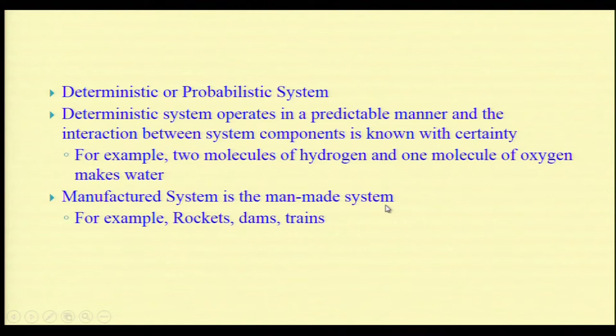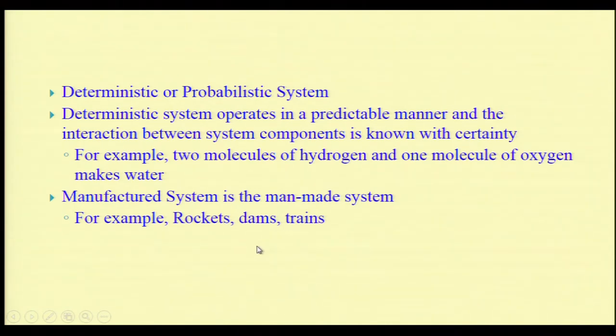We also have the deterministic or probabilistic system. A deterministic system operates in a predictable manner and the interaction between system components is known with certainty. For example, two molecules of hydrogen and one molecule of oxygen will give you water. A manufactured system is a man-made system — for example, spaceships, rockets, dams, and trains are all manufactured systems built by man.